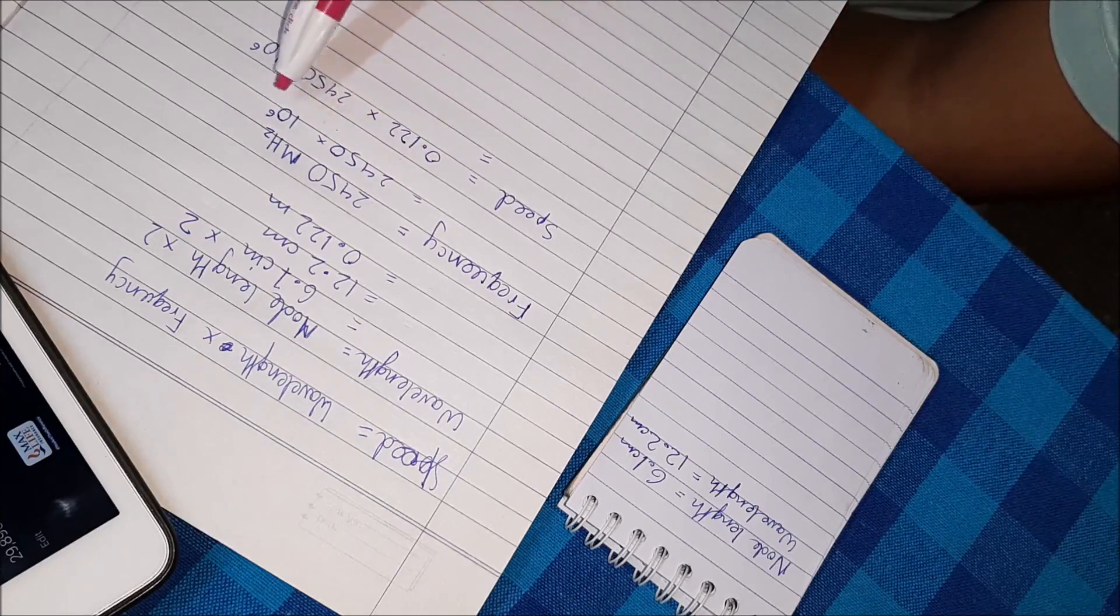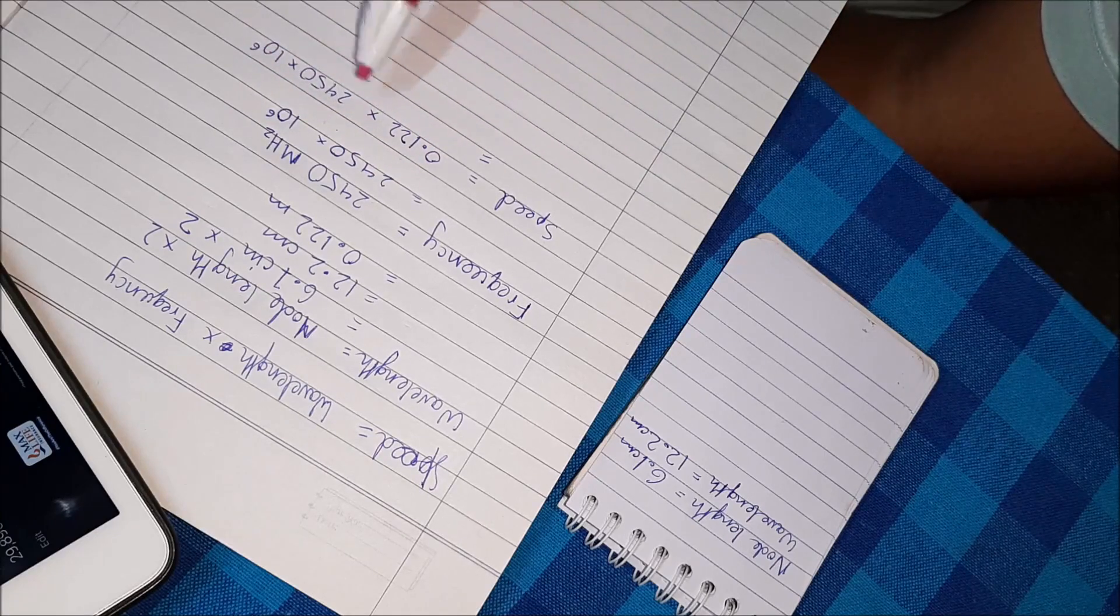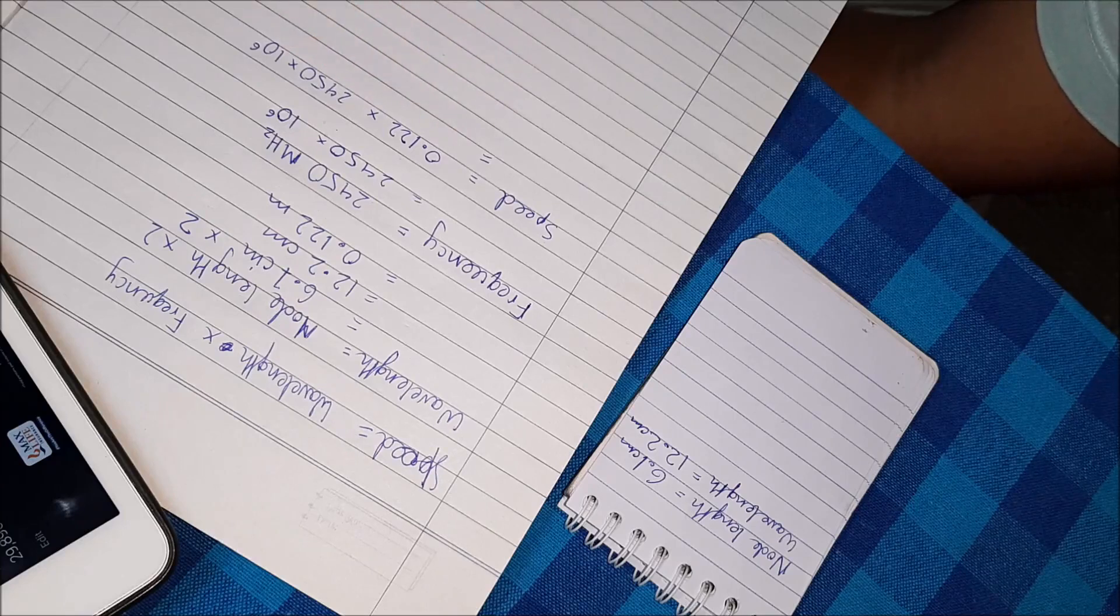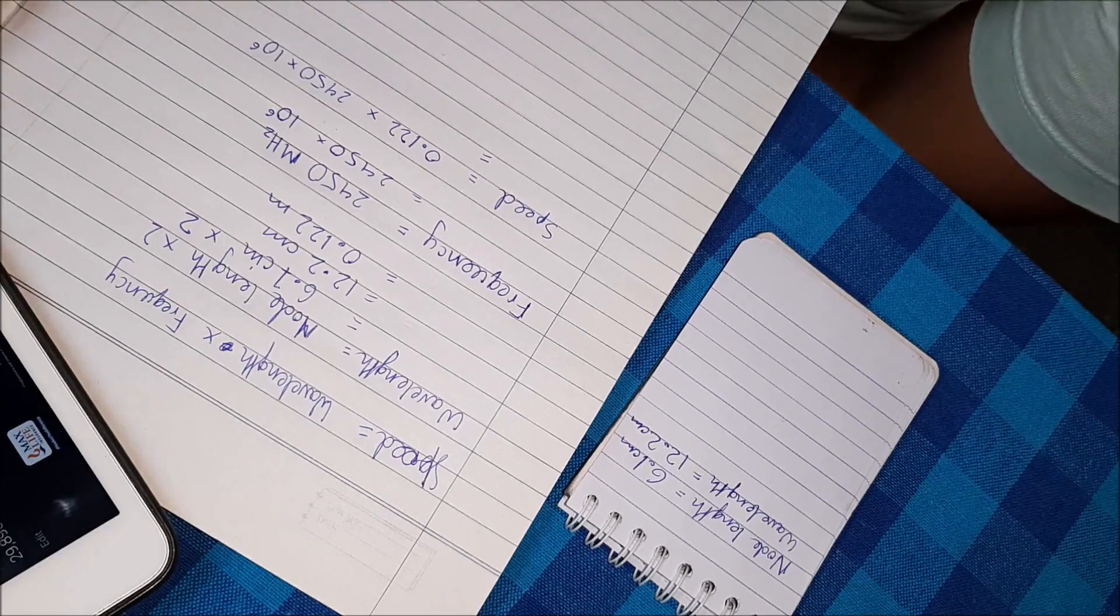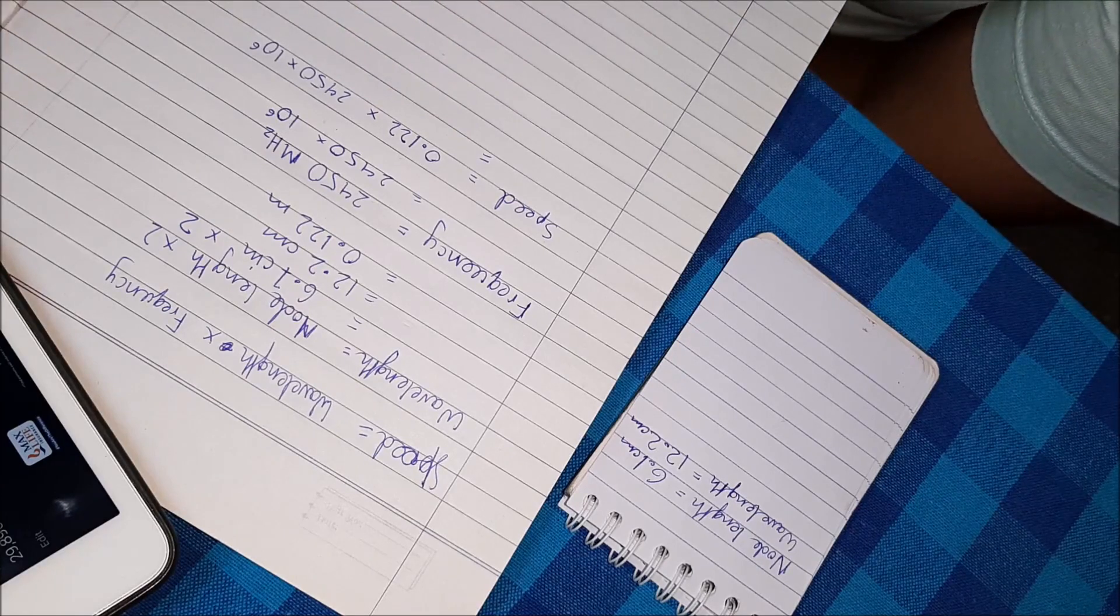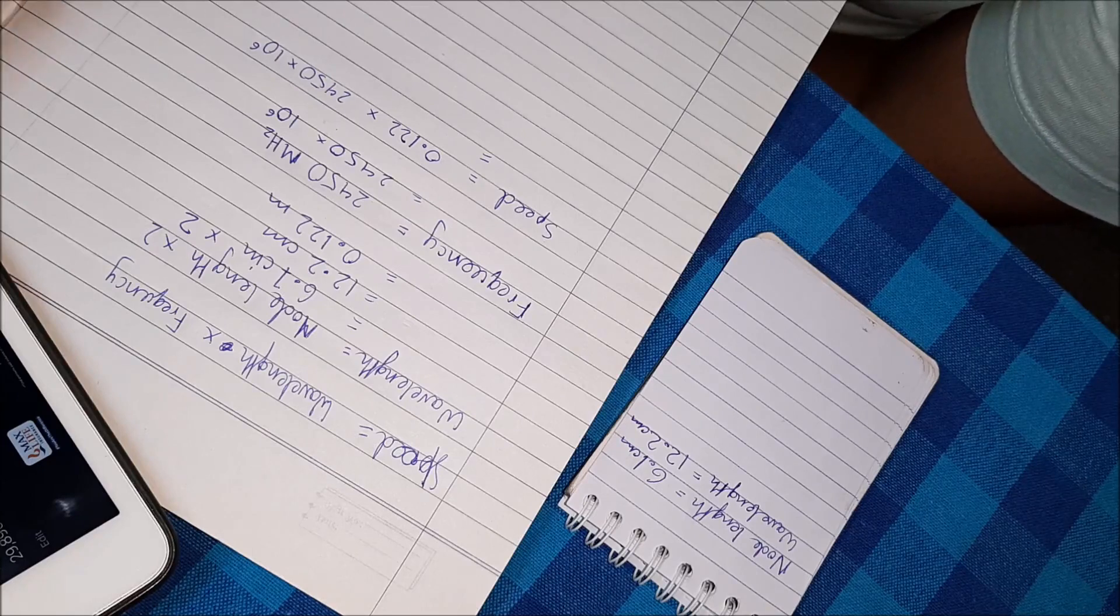That is 2450 into 10 to the power 6. So the speed is 0.122 into 2450 into 10 to the power 6. And we are going to just put those numbers in. So 0.122 into 2450 into 10 to the power 6.